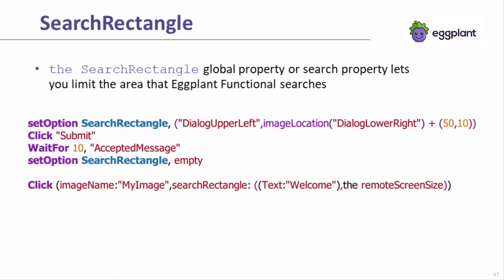The second example shows how to set the search rectangle within the context of a specific search, using the search rectangle property. This search rectangle is based on the hotspot of an OCR search and the lower right corner of the set screen, as returned by the remote screen size function. Search rectangles can be defined based on image searches, OCR searches, coordinates, or a combination of all three. We recommend using image or OCR searches, or the remote screen size, as often as possible to define search rectangles, as the search rectangle will change with the position of those components automatically.